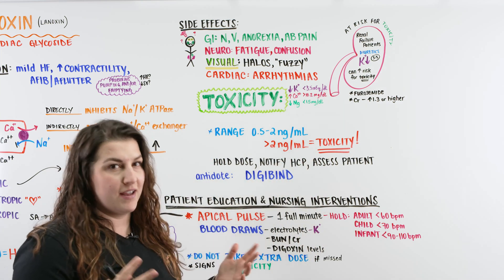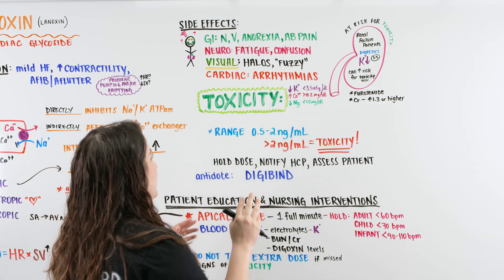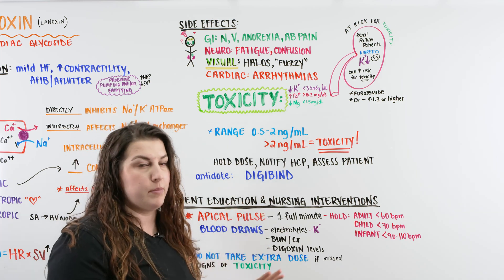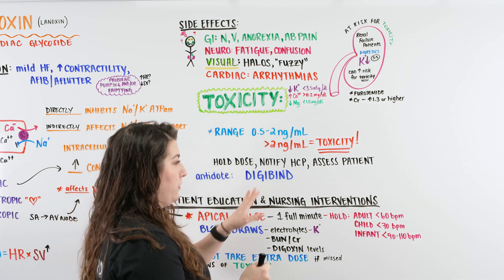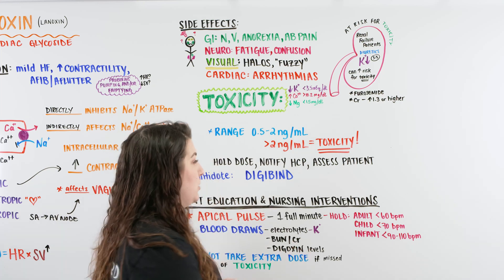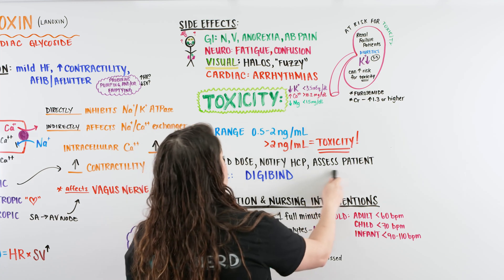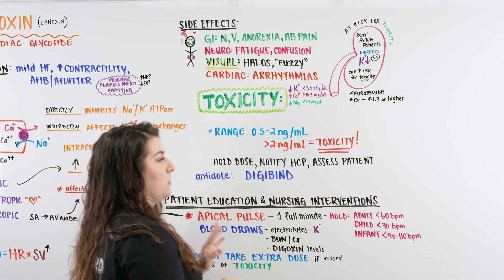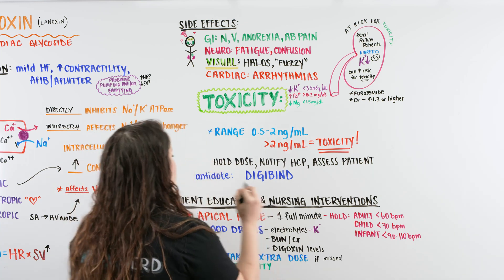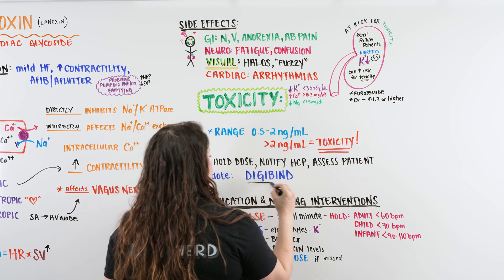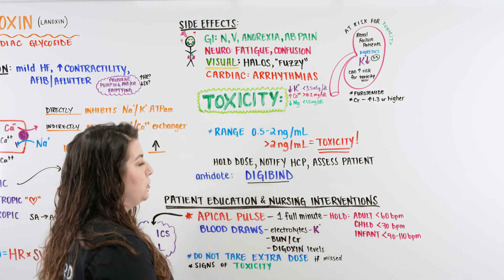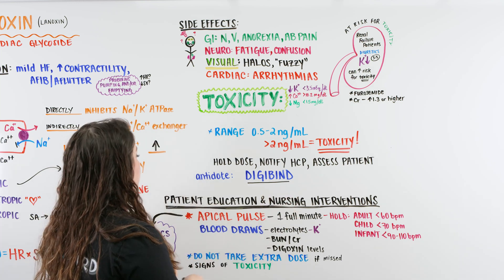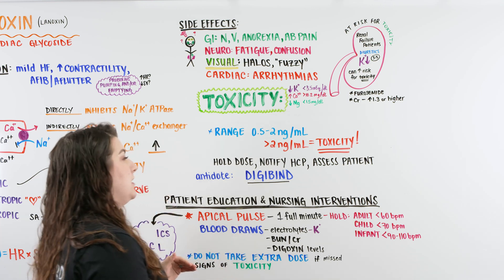If a patient is in digoxin toxicity — experiencing halos or confusion — first, hold the dose; do not give the next dose. Second, notify the doctor or healthcare provider. Assess the patient further: check for arrhythmias, possibly obtain an EKG, and listen to lung and heart sounds. The antidote is Digibind, which binds to digoxin, prevents it from binding to sites in the body, and brings the level back down to a safe range.